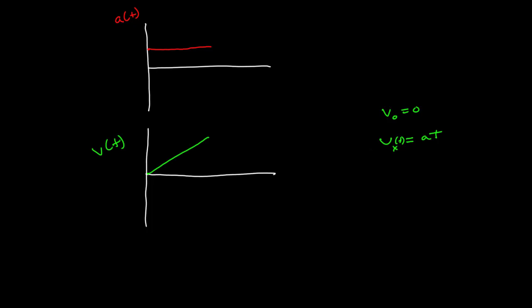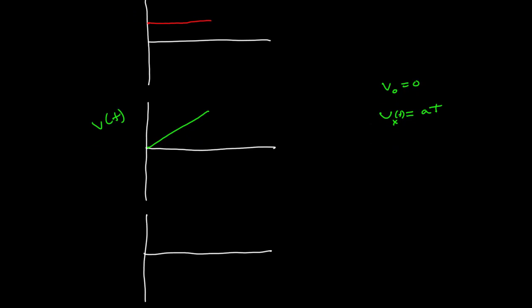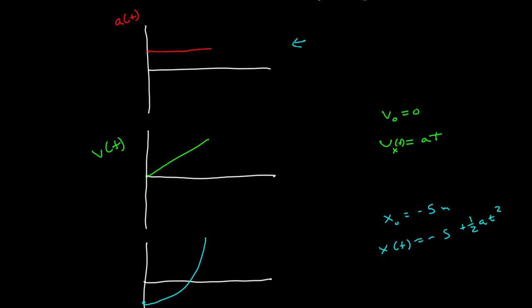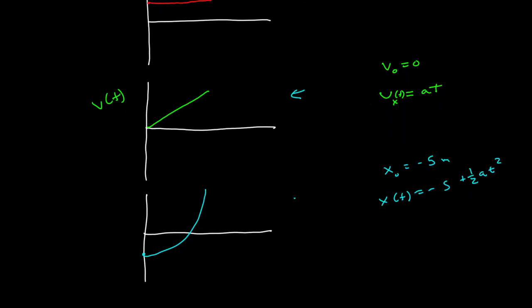Finally, what does my position look like? Well that also depends on where it starts. Let's say my initial position was equal to negative five meters, so my position function of time would be negative five plus one-half a t squared, since the initial velocity was zero. So it starts at some negative value and gives a positive parabola going up. These are what the constant acceleration graphical representations look like: acceleration is a constant, velocity is a straight line whose slope is the value of the constant acceleration, and the position function is a parabola given by the acceleration.